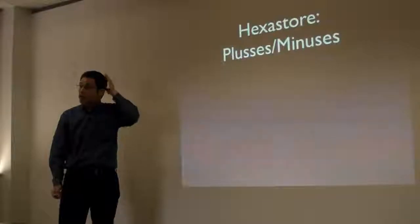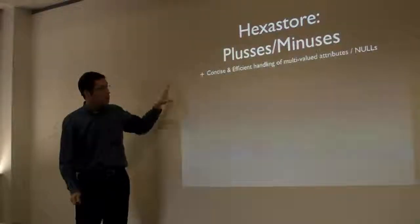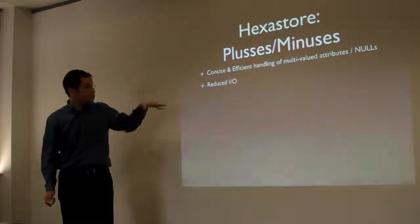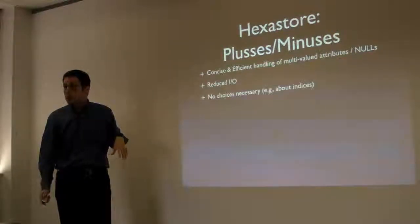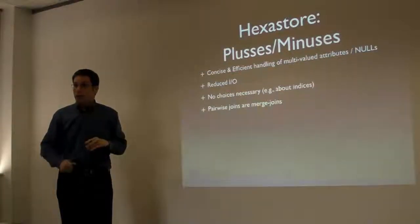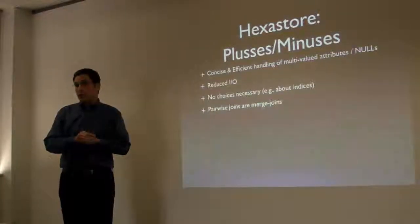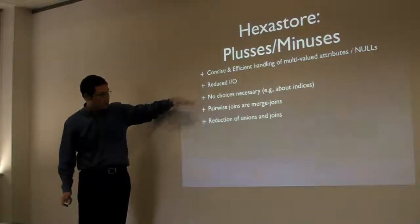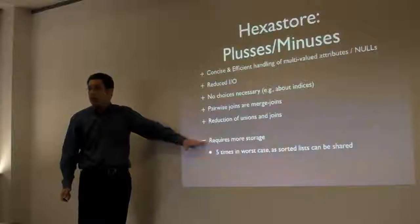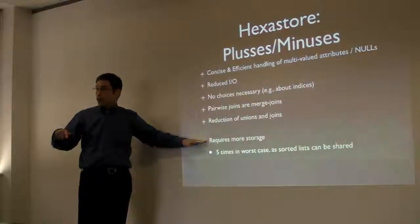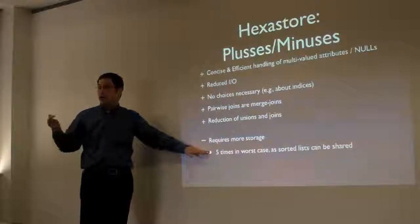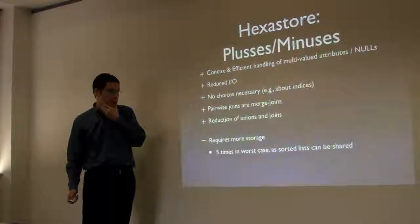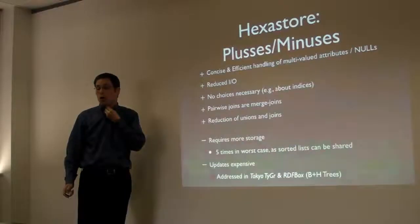Yes, so what are the pluses and minuses of this hexastore approach, which we published at VLDB? Concise handling of nulls, there are no nulls, reduced IO, no choices necessary about indices. What we find empirically is, well, worst case is you get, sorry, let me get to this, pairwise joins or merge joins, reduction of unions and joins. The disadvantage is you store things multiple times. At worst case, you have a five times overhead. Practically, it's about the three times overhead on what you have in practice. And the second thing are updates.